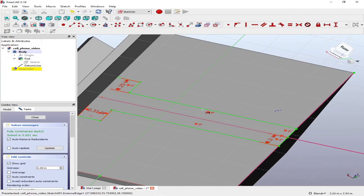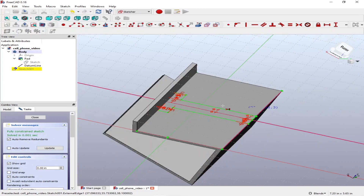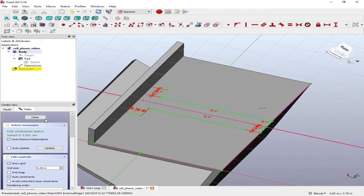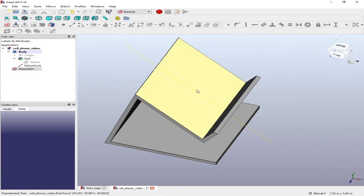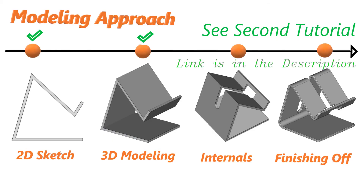The sketch is fully constrained, so we can close it out. That completes this portion of the tutorial. In my next video I'll complete the construction of the cell phone holder. If you find it useful, please subscribe — thank you!